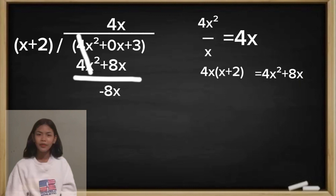So our answer is negative 8x. Then bring down positive 3. So our dividend now is negative 8x plus 3.